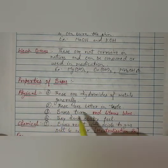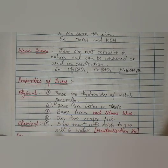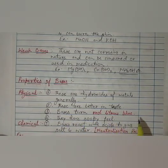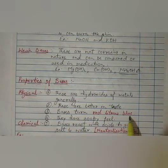Third point is bases turn red litmus blue. And acids were turning blue litmus into red. So it is just opposite nature. Bases turn red litmus paper into blue.